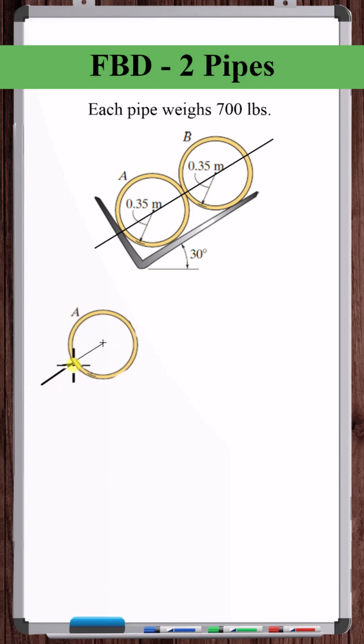We have a normal force from the fork acting at 30 degrees here. We've got a force from pipe B acting here. We've got the weight of the pipe acting down, and we've got another normal force from the fork acting here.